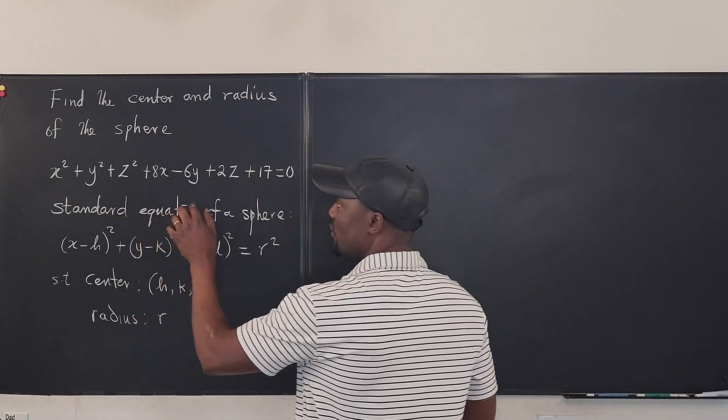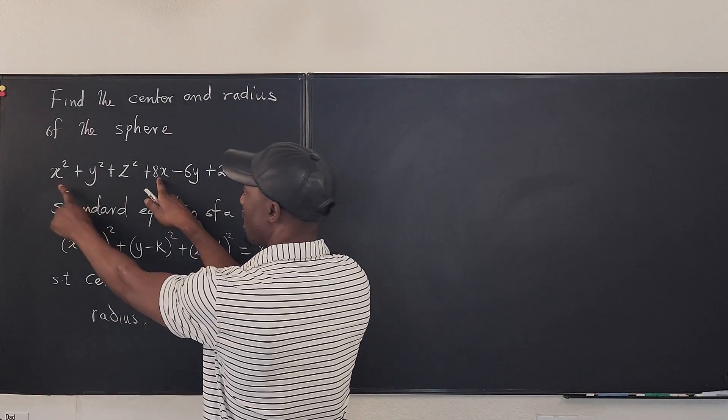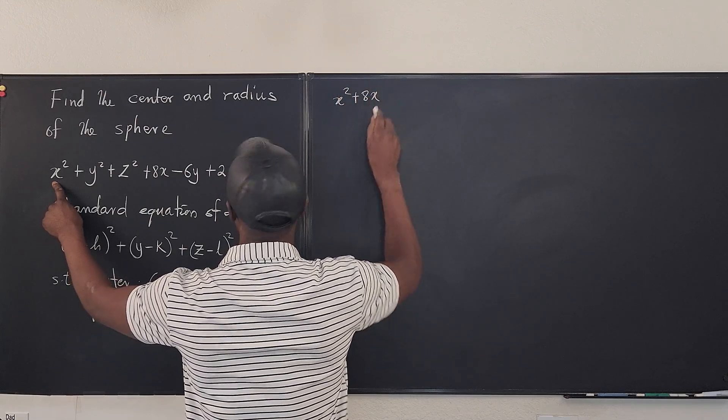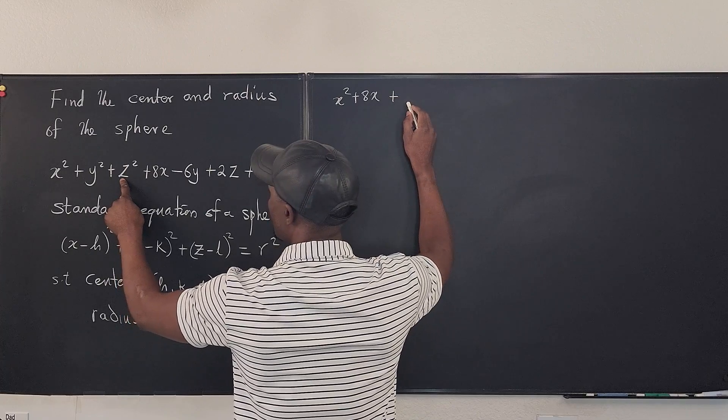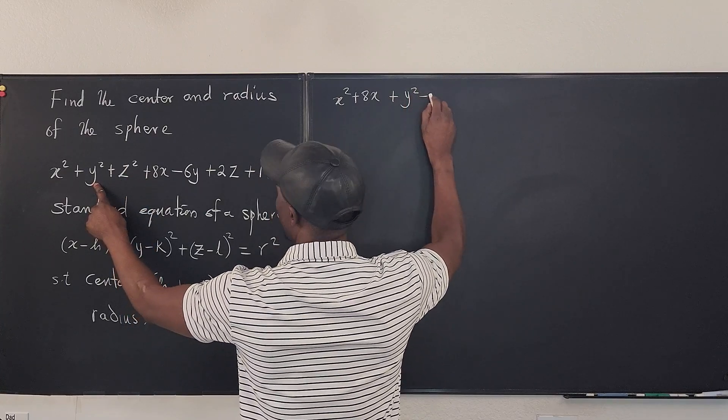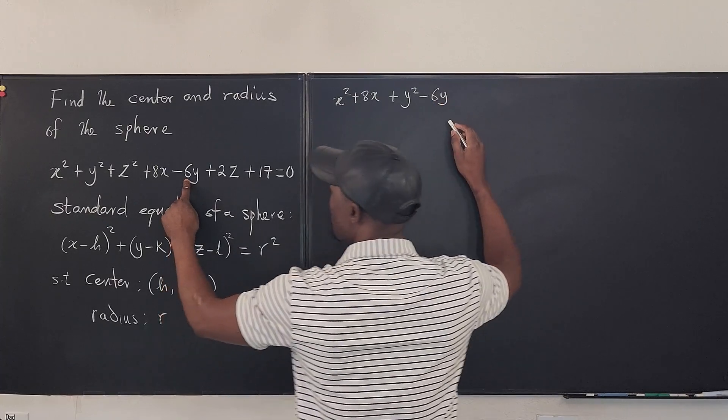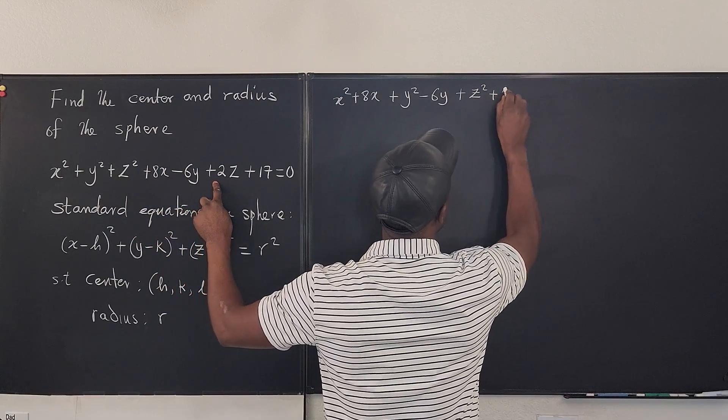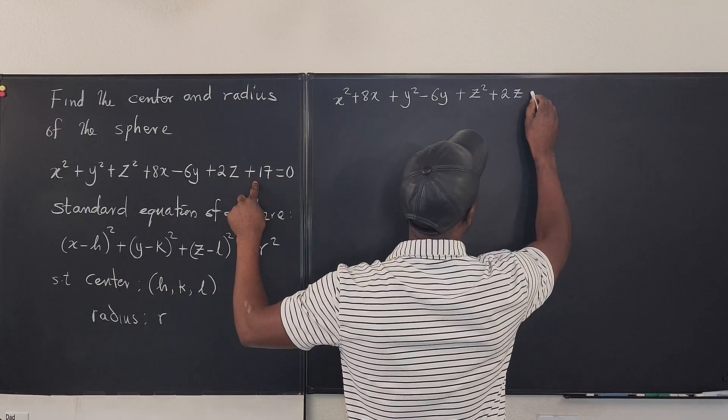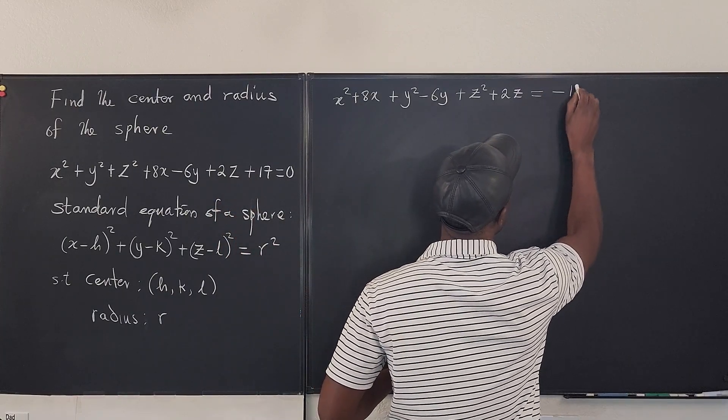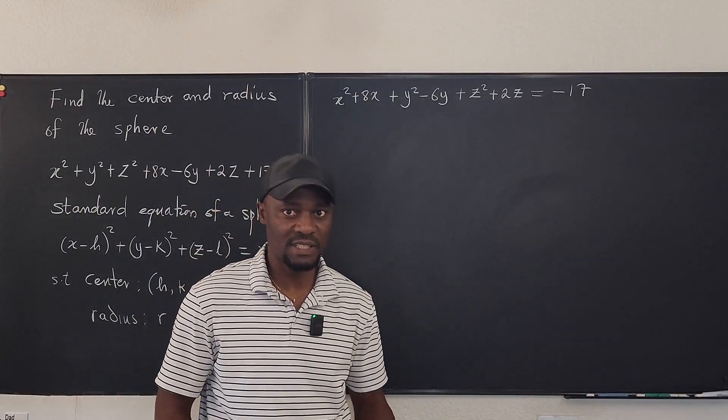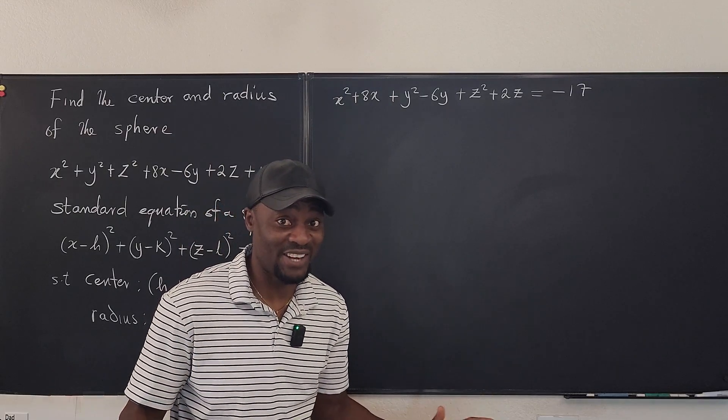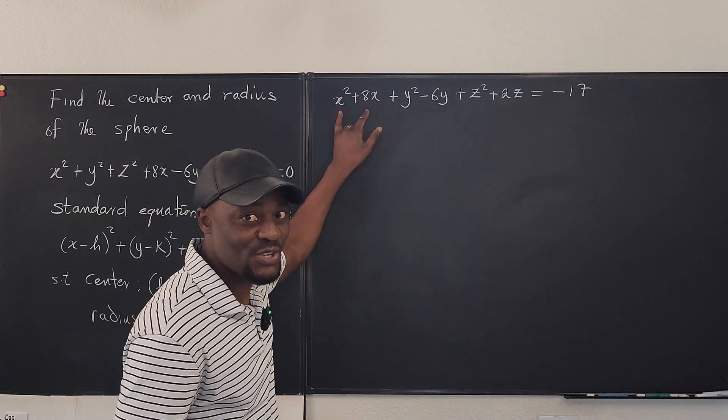What I'm going to do is in order to complete the squares for x, I have to put these two together. So I'm going to say that x² + 8x, I rearrange, then plus y² - 6y. And then we do for z, that's plus z² + 2z. Then we can move the 17 over. We're not going to be using this negative 17 at all.